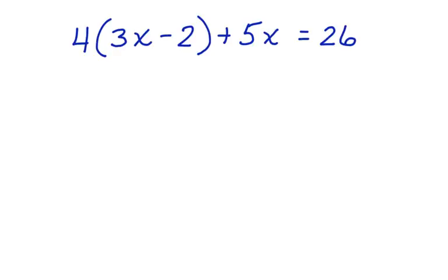Now this is a multi-step equation, but before we can do anything, we need to use the distributive property to simplify and get rid of these parentheses. We do that by taking 4 and multiplying it by both terms inside the parentheses.